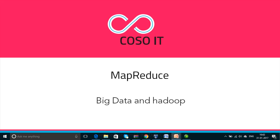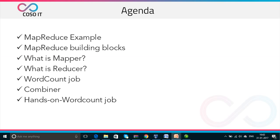Welcome to the Big Data and Hadoop tutorial series presented by Corso IT. This video is focused on MapReduce. In this topic, we are going to talk about MapReduce with an example. We will see the MapReduce building blocks, what is Mapper and what is Reducer. We will be talking about the word count job and the combiner role in word count job. Finally, we will be doing one hands-on exercise on how to run a word count job in Eclipse in Java.